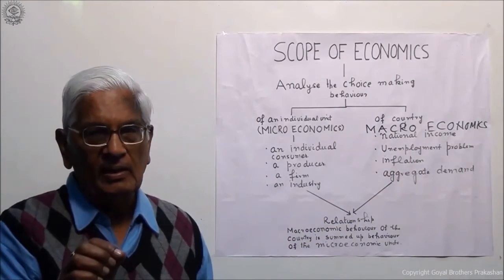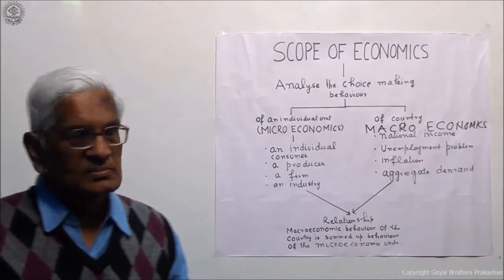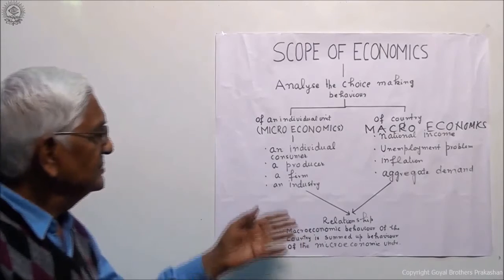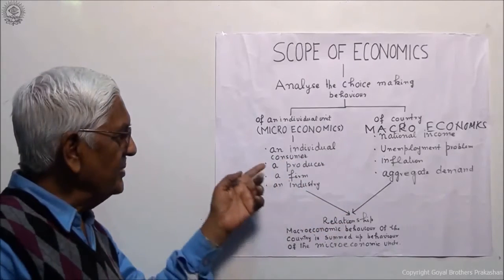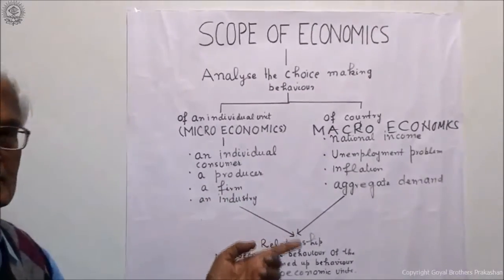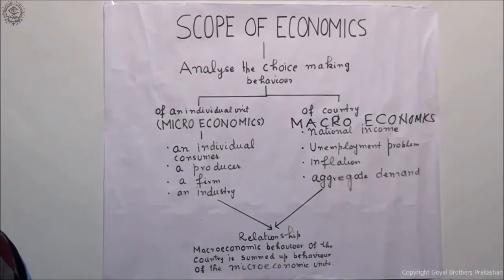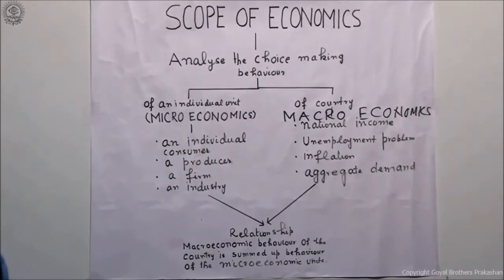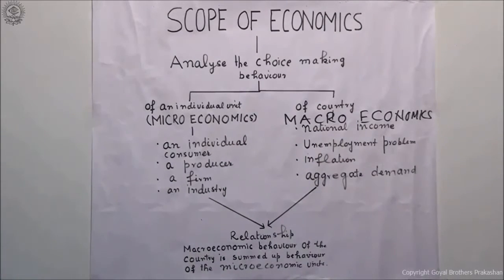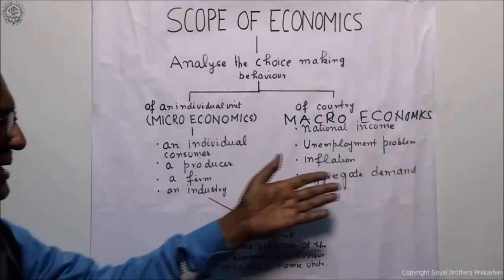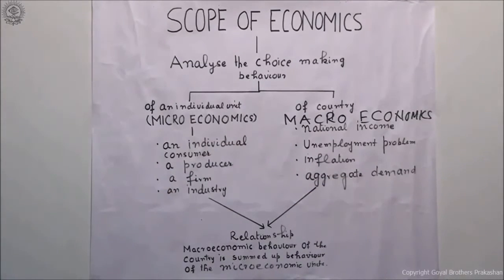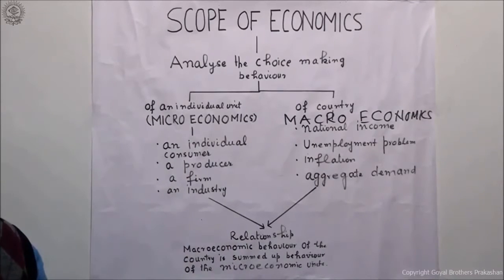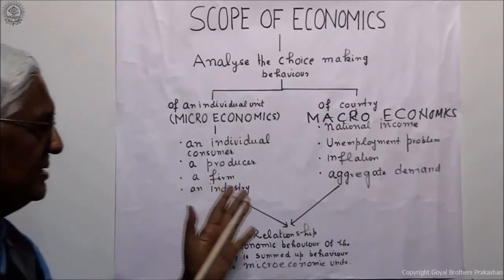In economics, micro and macro have a specific meaning. If we talk about the country as a whole, then it is macroeconomics. But if we talk about any individual unit — that unit may be a consumer, a producer, a firm, or an industry — that is microeconomics. When we talk of things like national income, unemployment, inflation in the country, or aggregate demand of the country, then we are talking of macroeconomics. So your entire economics is divided into two categories: microeconomics and macroeconomics.